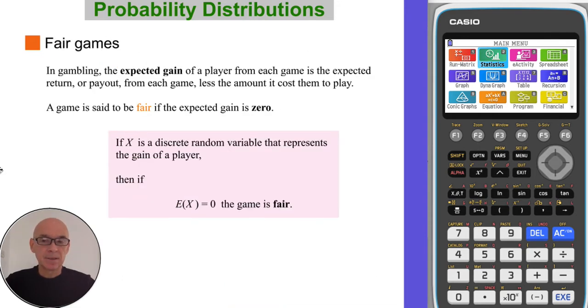In gambling, the expected gain of a player from each game is the expected payout or the return from each game, less the amount it costs them to play. A game is said to be fair if the expected gain is zero.